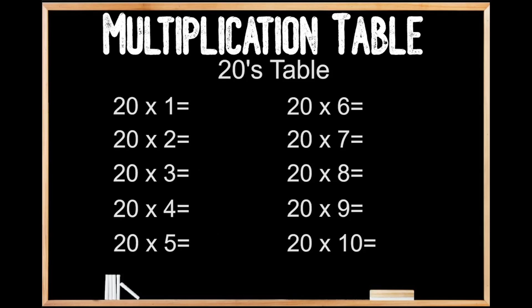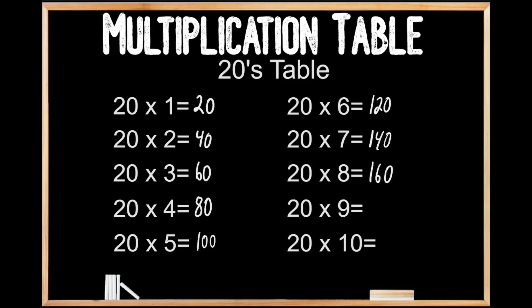20's table. 20 times 7 is 140. 20 times 8 is 160. 20 times 9 is 180. And 20 times 10 is 200.